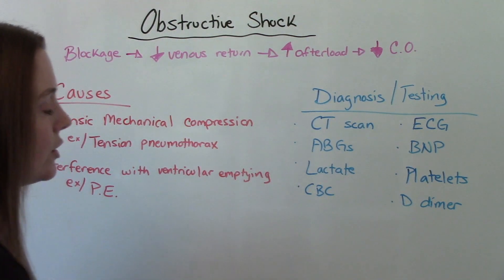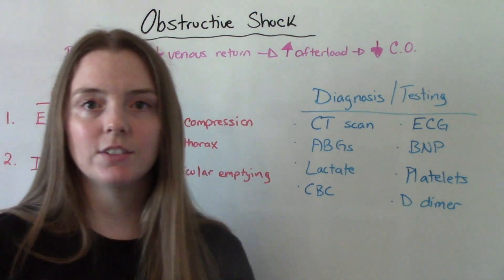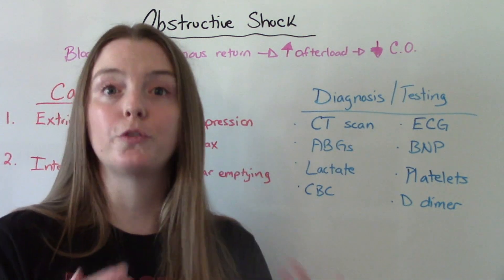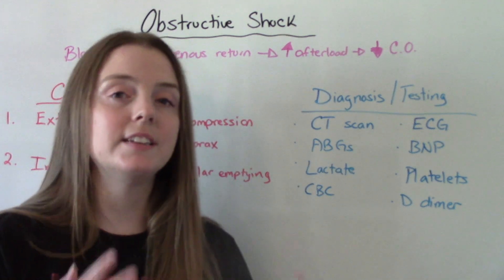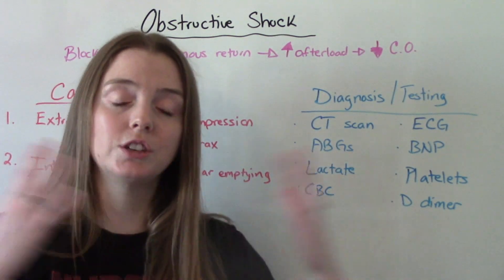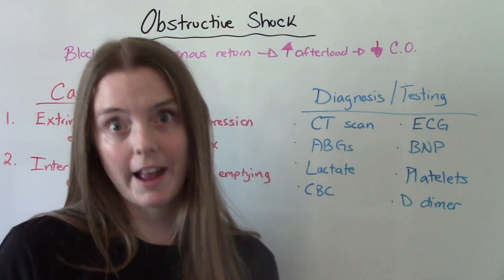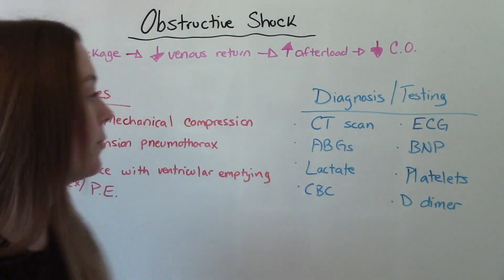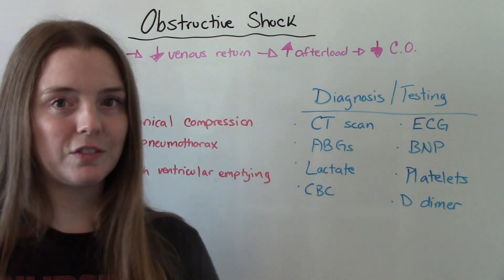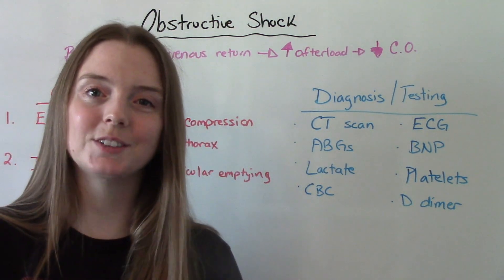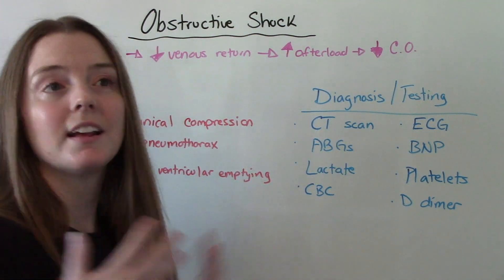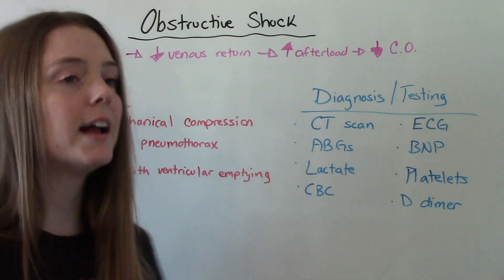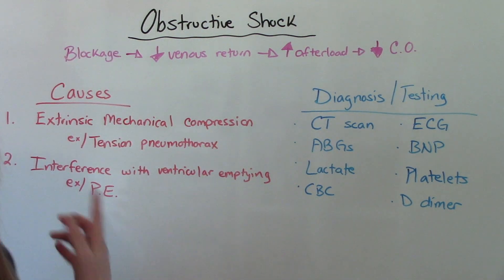Lactate levels — having high lactate levels indicates our body is not getting our tissues perfused as well, which is indicative that there's a problem with the oxygenation of our tissues. Of course, a good old fashioned CBC — we need to know what we're starting with. And then coagulation studies; they might want to look at platelets, they might want to do a D-dimer, especially if they're suspecting something like a PE.